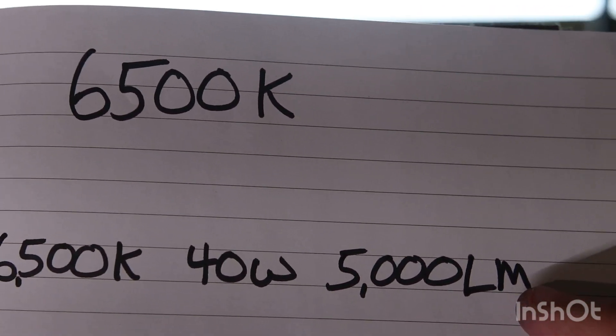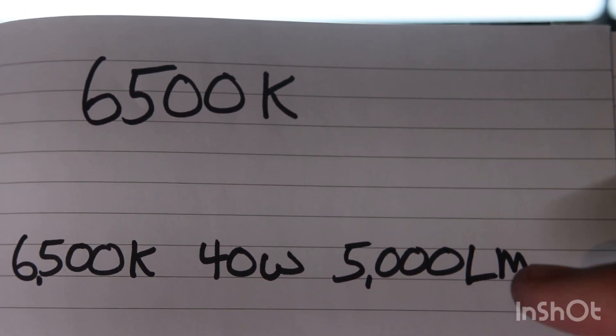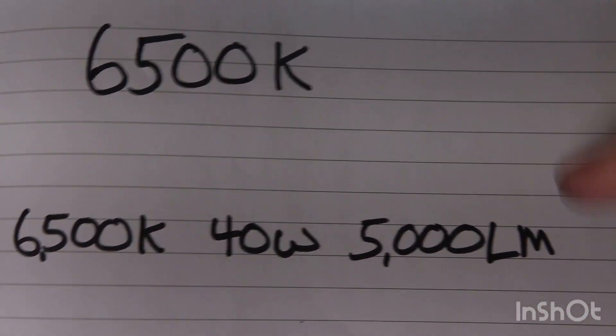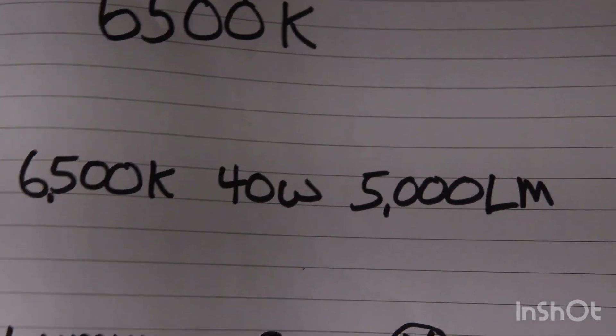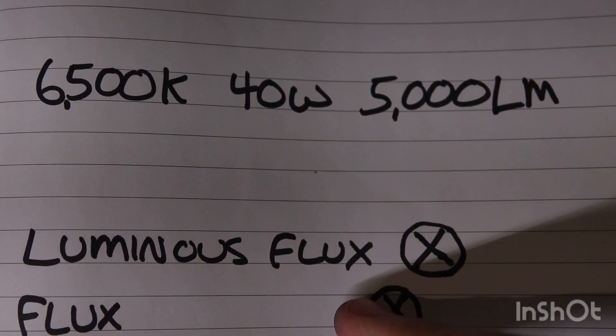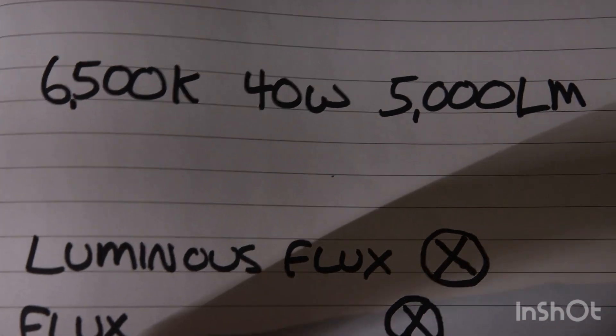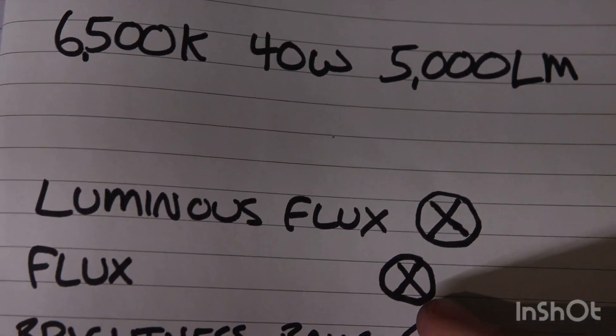The lumens are important. A lot of times when you're buying lights they're going to be in different measurements. You want specifically lumens. You're going to see something like 5,000 luminous flux. It doesn't mean anything. See like 6 million flux. It doesn't mean anything to you.